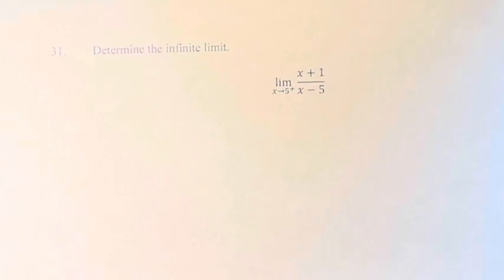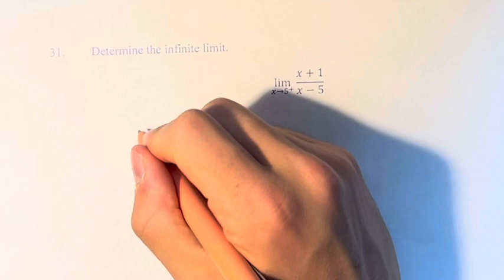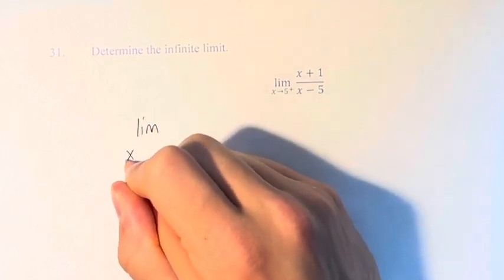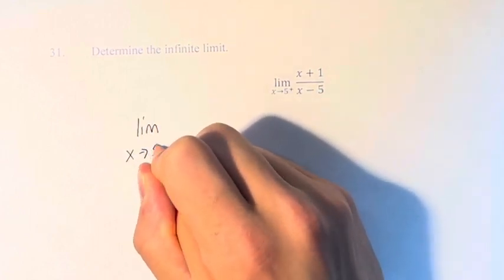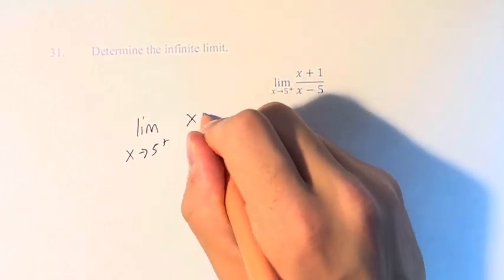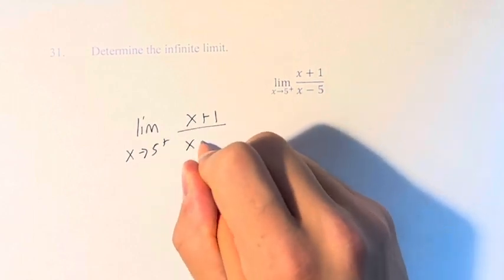Hello, and welcome back to another video. In this problem, we're asked to determine the infinite limit: the limit as x approaches 5 from the right of (x + 1) over (x − 5).